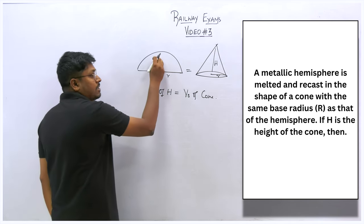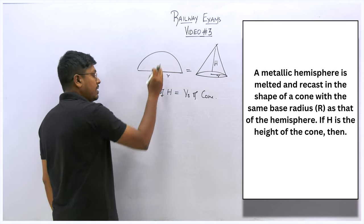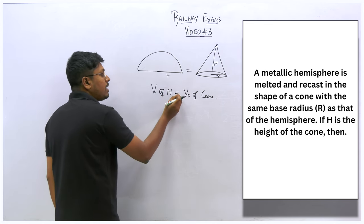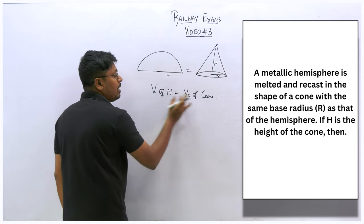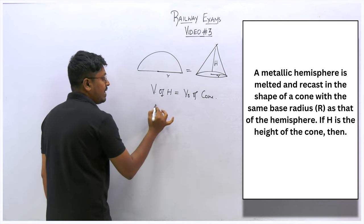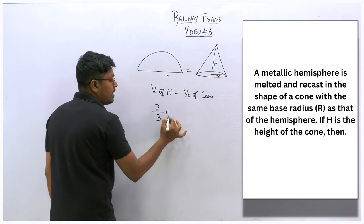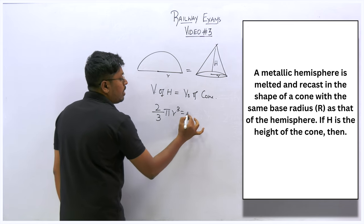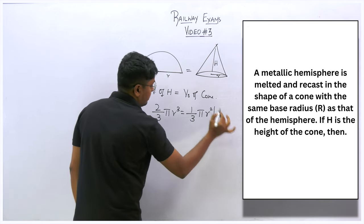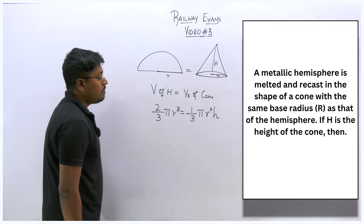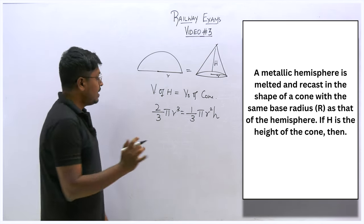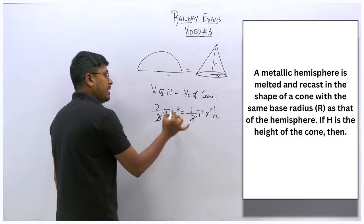In all measurement melting questions, remember: volume of hemisphere equals volume of cone. Volume of hemisphere is 2/3 πr³ and volume of cone is 1/3 πr²h. Our target is to find the height of the cone.